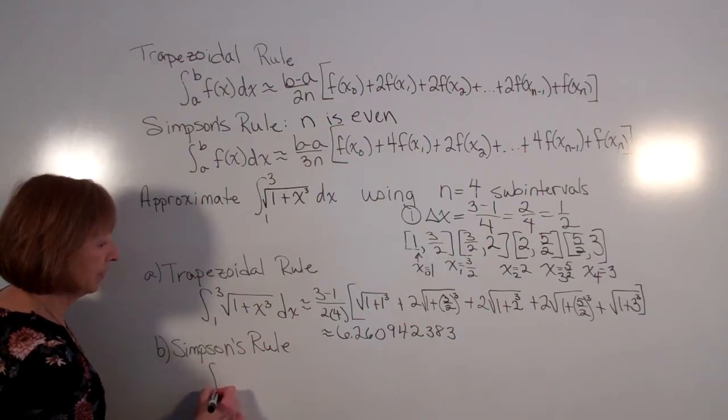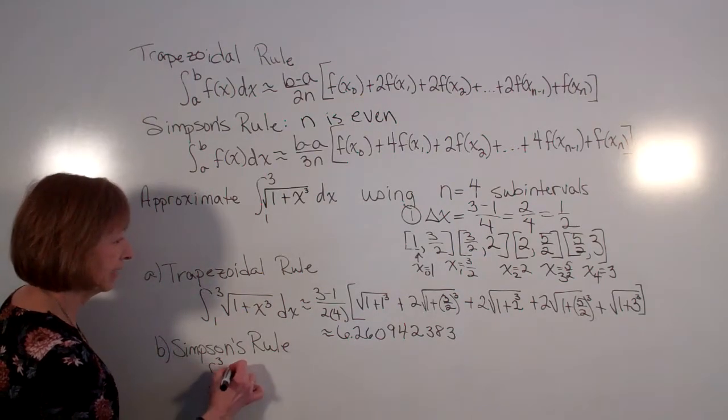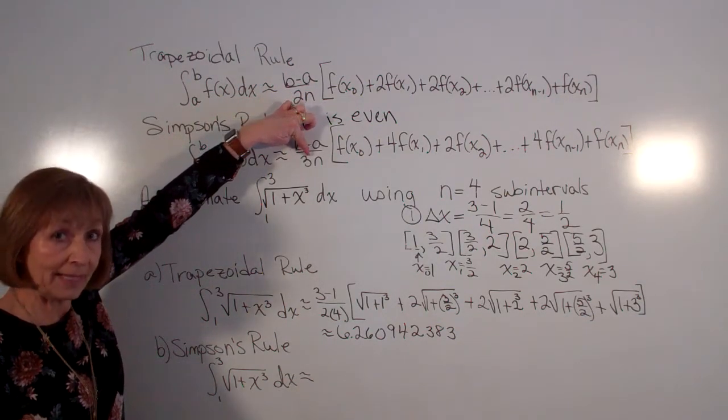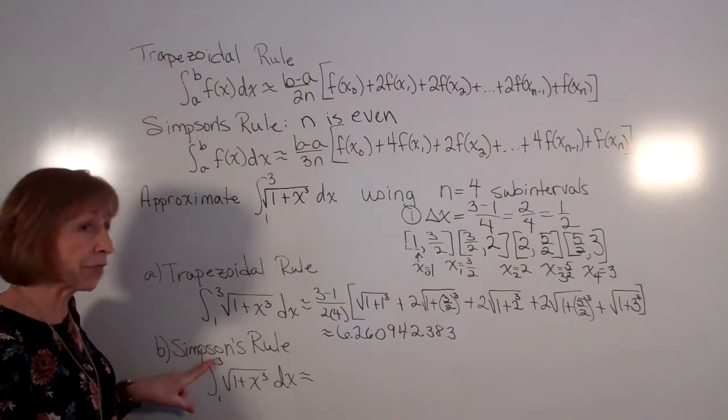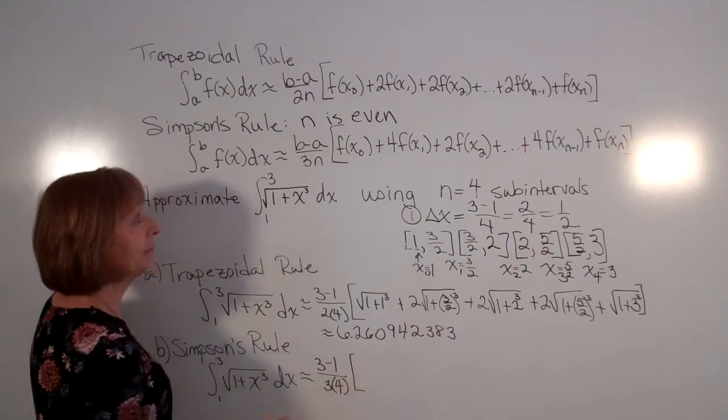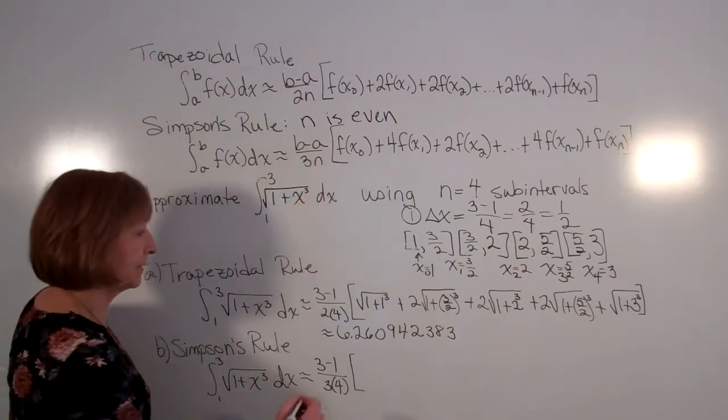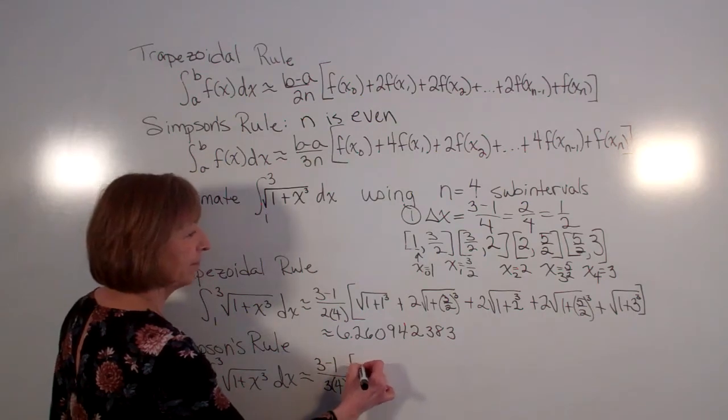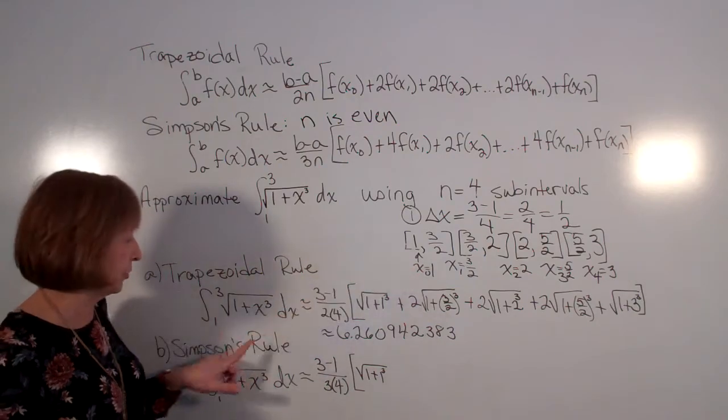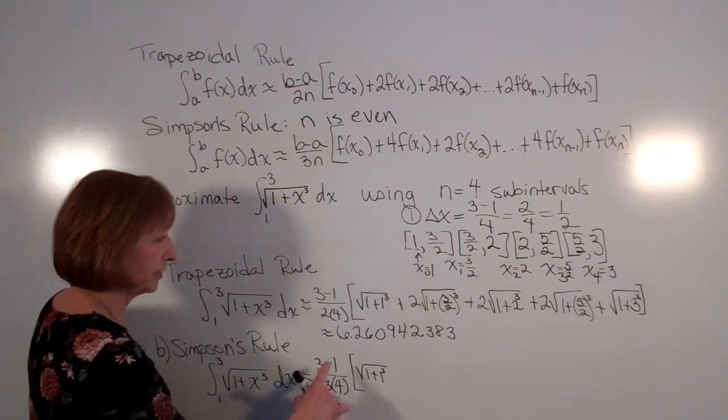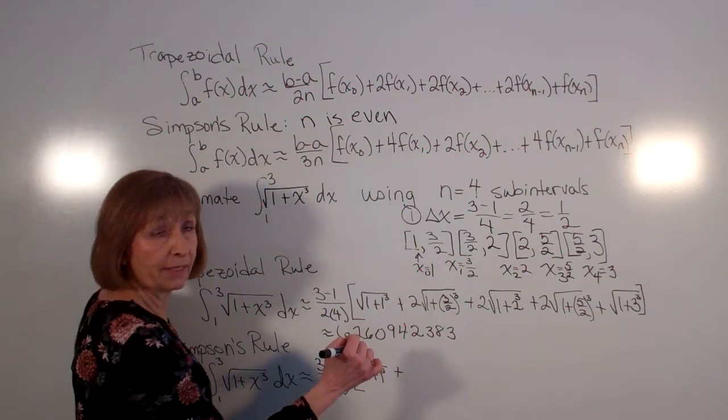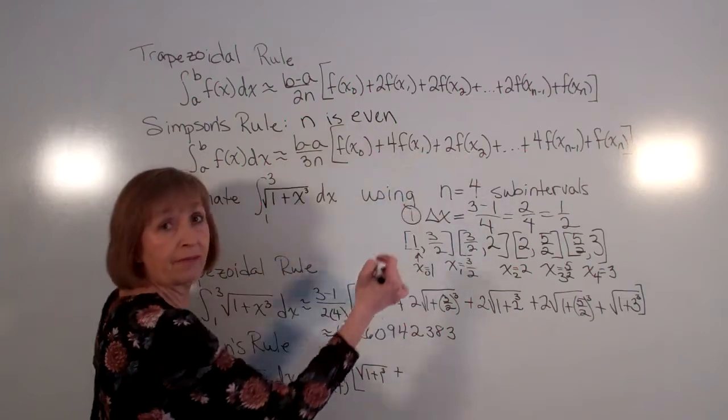Now for Simpson's rule, my approximation for this definite integral, well this is b minus a over 3n. So 3 minus 1 over 3 times 4. And then times I still have my f of x sub 0. So I still have my square root of 1 plus 1 cubed. Remember x sub 0 is your a, which is the start of your first interval. And then plus 4 times f of x sub 1, but then 2 times f of x sub 2, etc.